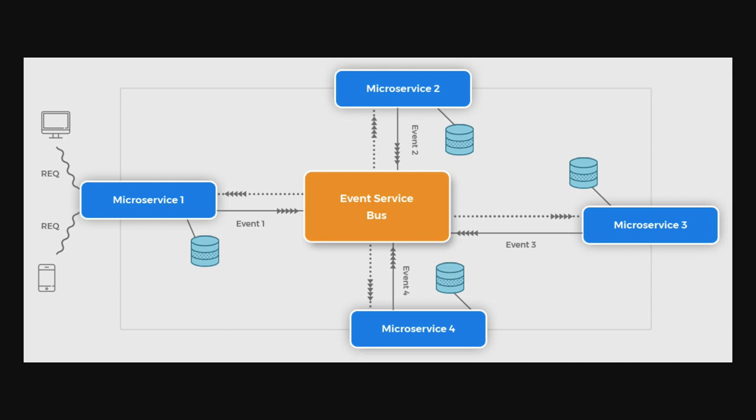One of the first things you learn about EDA — event-driven architecture — is that it introduces loose coupling in your architecture. Microservices don't need to know about each other; systems and applications don't need to know about each other. This is often a strong guiding force to implement EDA. When services are independent and don't need to know about each other, you can introduce an event bus using different underlying tools.